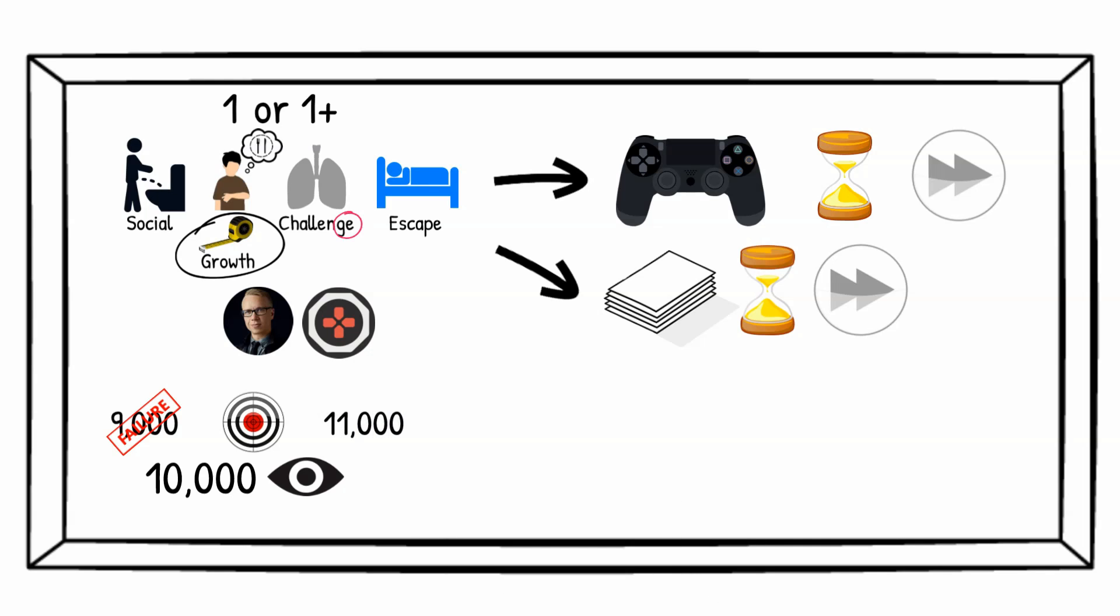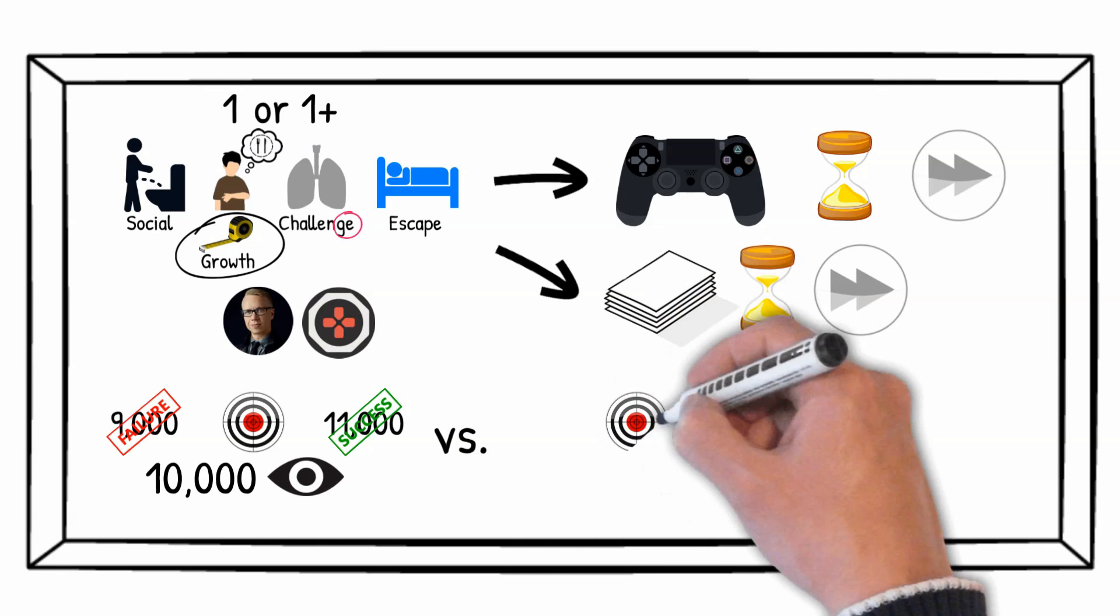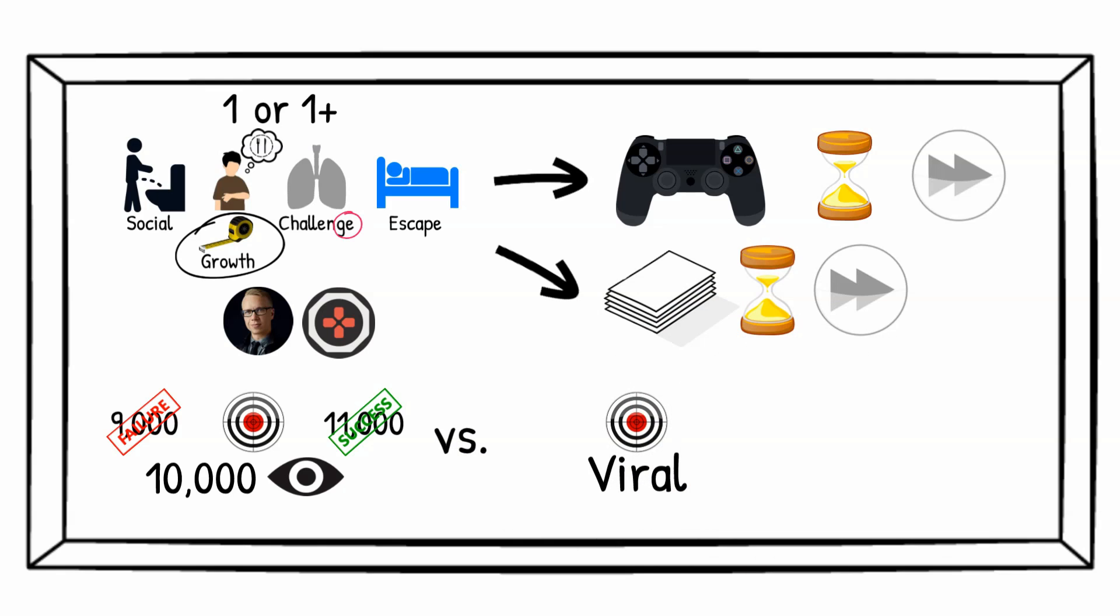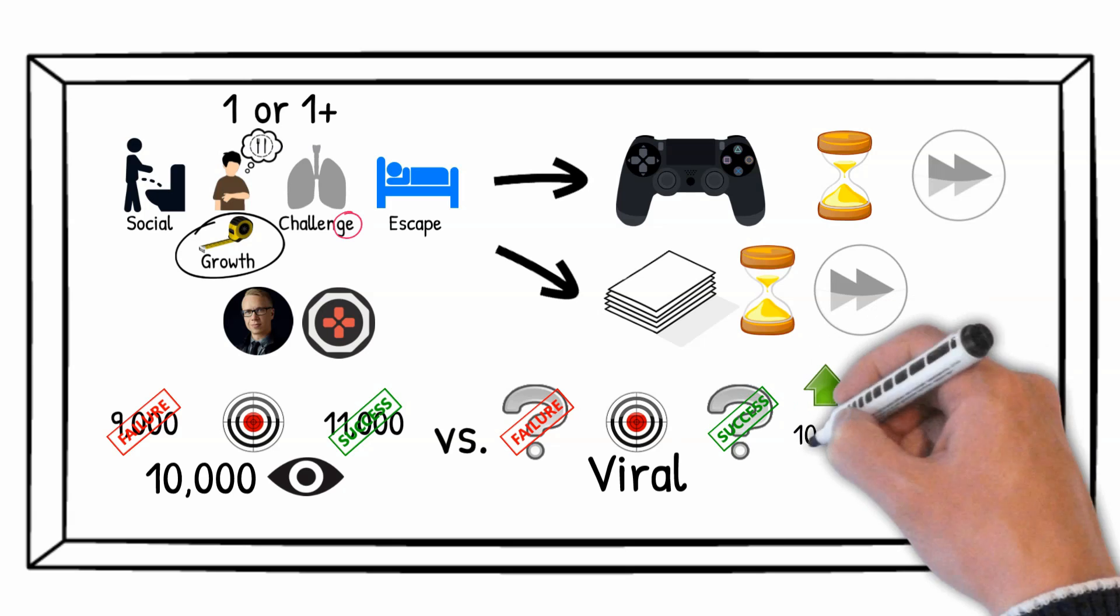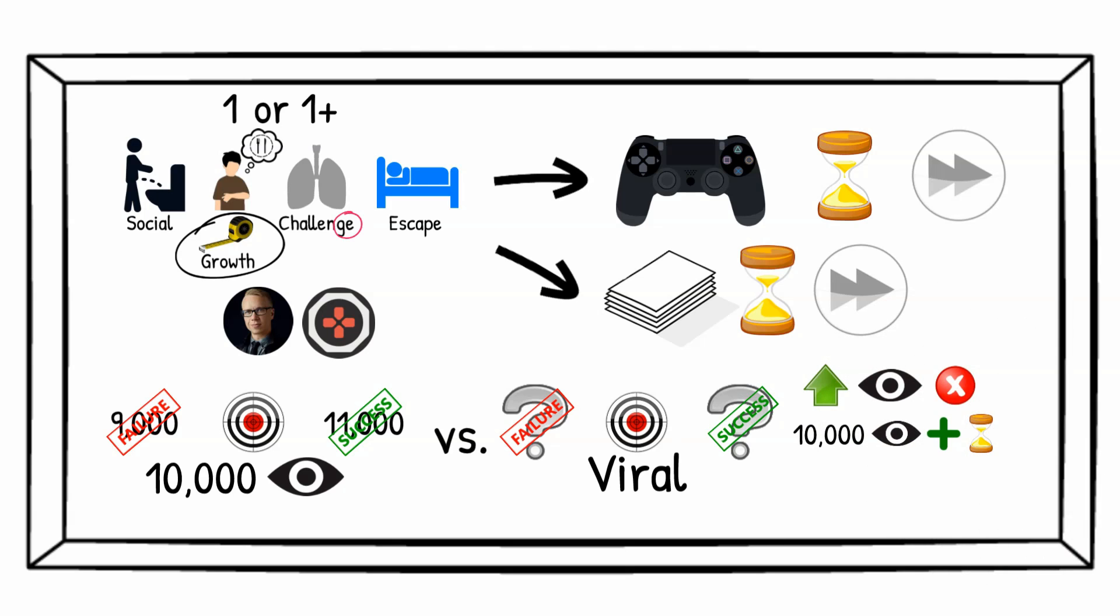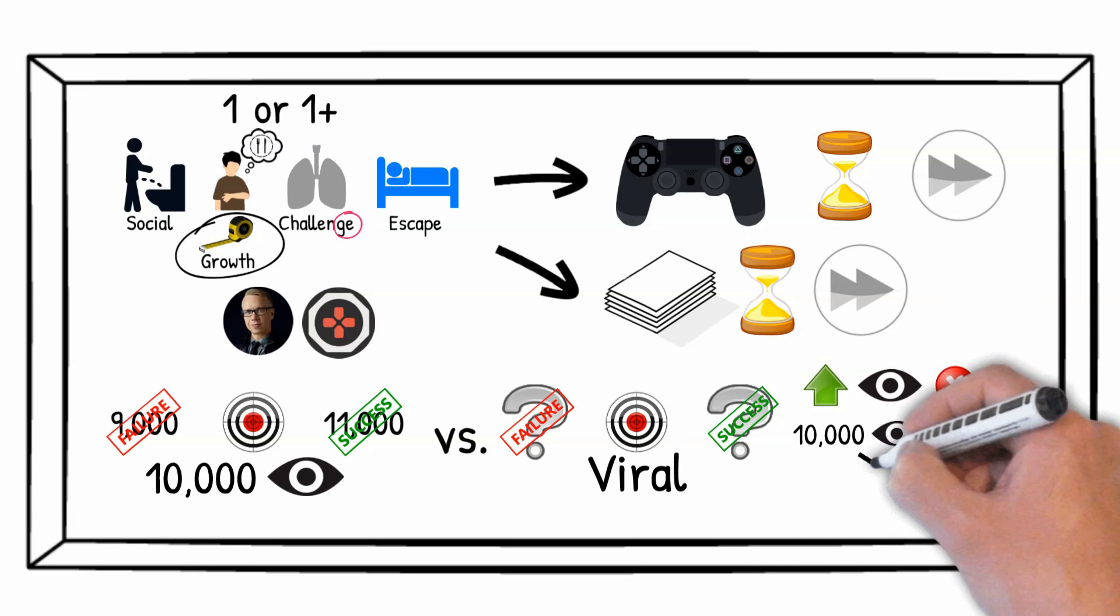You can then say you failed if you get 9,000 views and that you have succeeded if you get 11,000 views. Not so if you initially said you want to have your video go viral. What is viral? A million views? Two million in a month? A year? Don't fall for the vague 'I want more views' mentality.